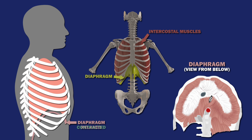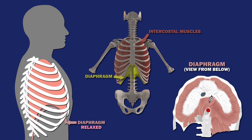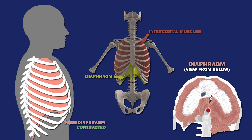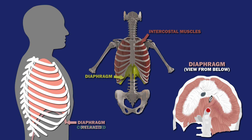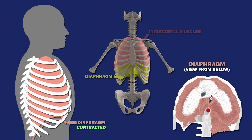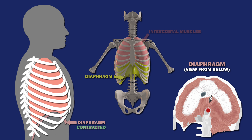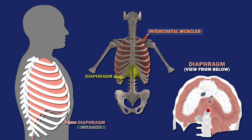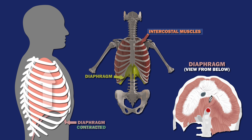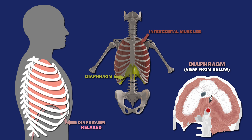The lungs can't power the breathing process on their own, but only expand with the expansion of the thoracic cavity. Instead, muscles of respiration, primarily the diaphragm, drive breathing. The broad, concave surface of the lungs sits on the convex surface of the diaphragm. The intercostal muscles pull the ribcage upwards, and the respiratory muscles relax when you breathe out.